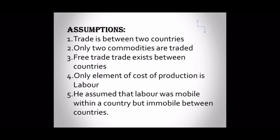Now, the assumptions of this model. First, trade is between two countries only — in this model we only assume two countries, such as the USA and India. Second, only two commodities are traded — we will only show trading of two commodities between them, such as wheat and cloth. Combining the first and second assumptions gives us a two-country, two-goods model. Third, free trade exists between the countries — there will be no custom duties or any taxes on exports and imports.